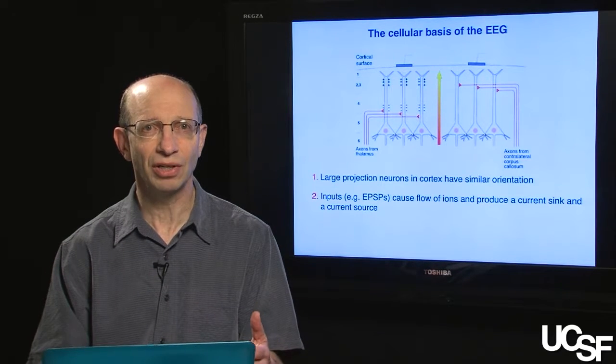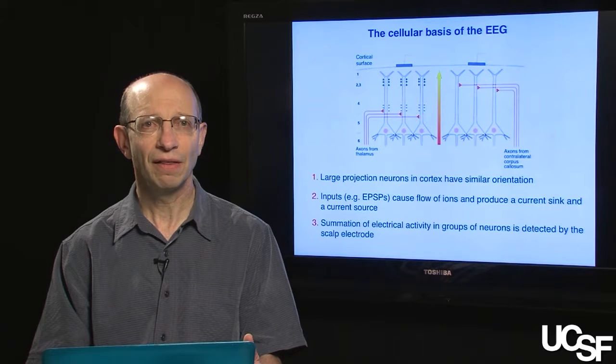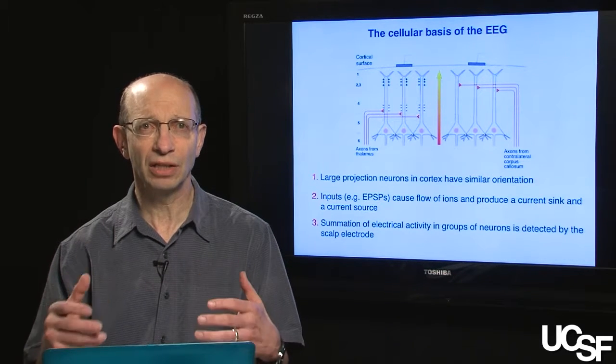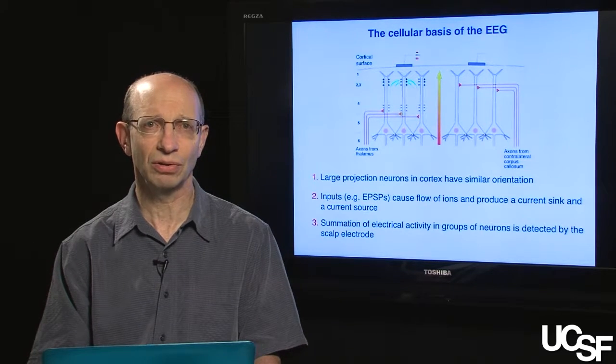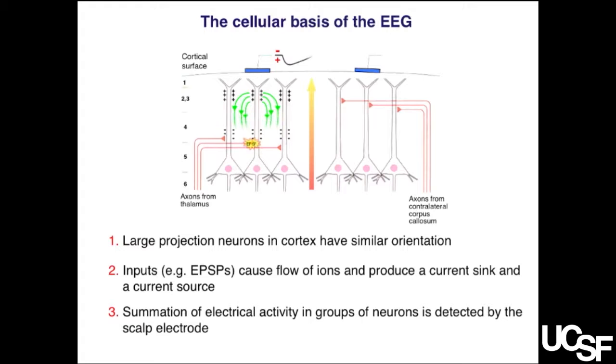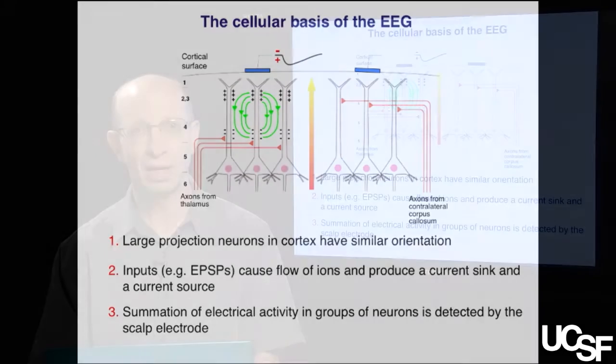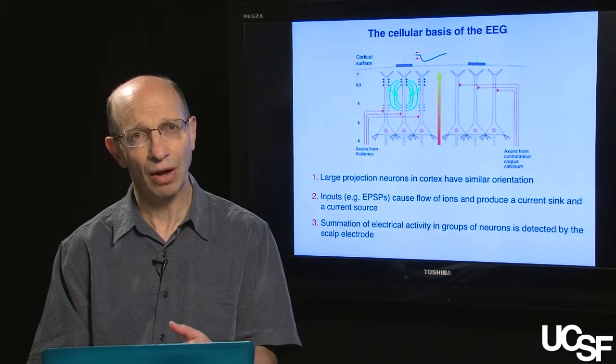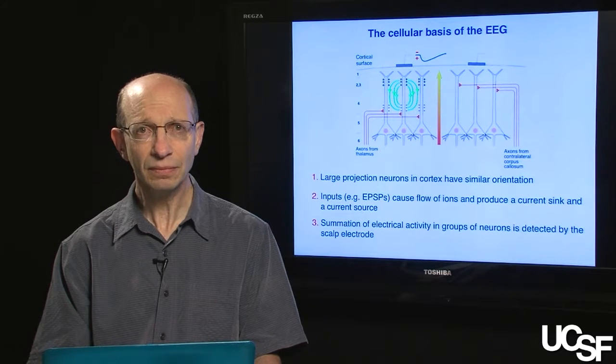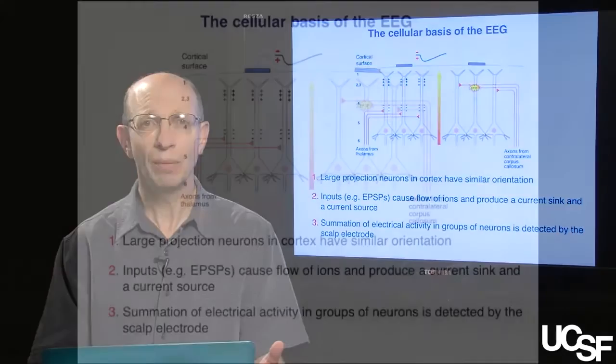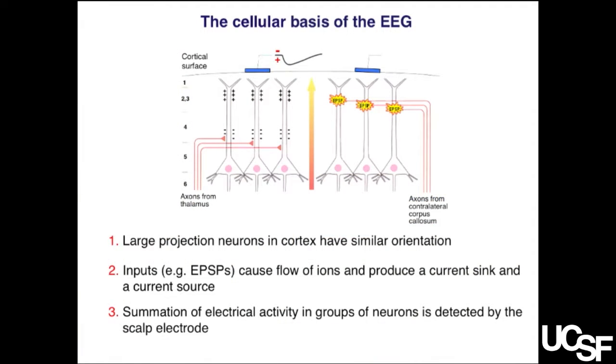It's when there is a summation of this activity all at once that you get the ability to detect the electrical signals from the scalp electrodes. As you see this movement of current, the electrode is picking up a relative positive charge close to the electrode, and that's why you see the waveform going downward. This all depends on the orientation and the timing of the inputs. On the other side, the EPSPs striking the more distal dendrite create a sink and source, and the EEG electrode picks up relative negative charge.